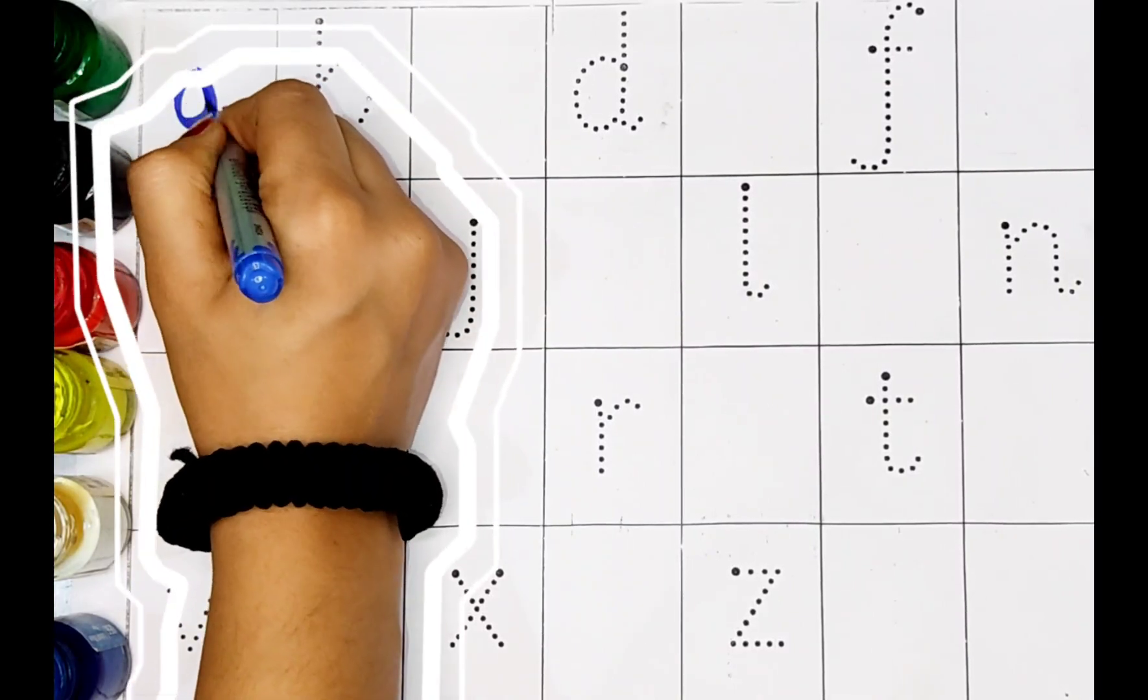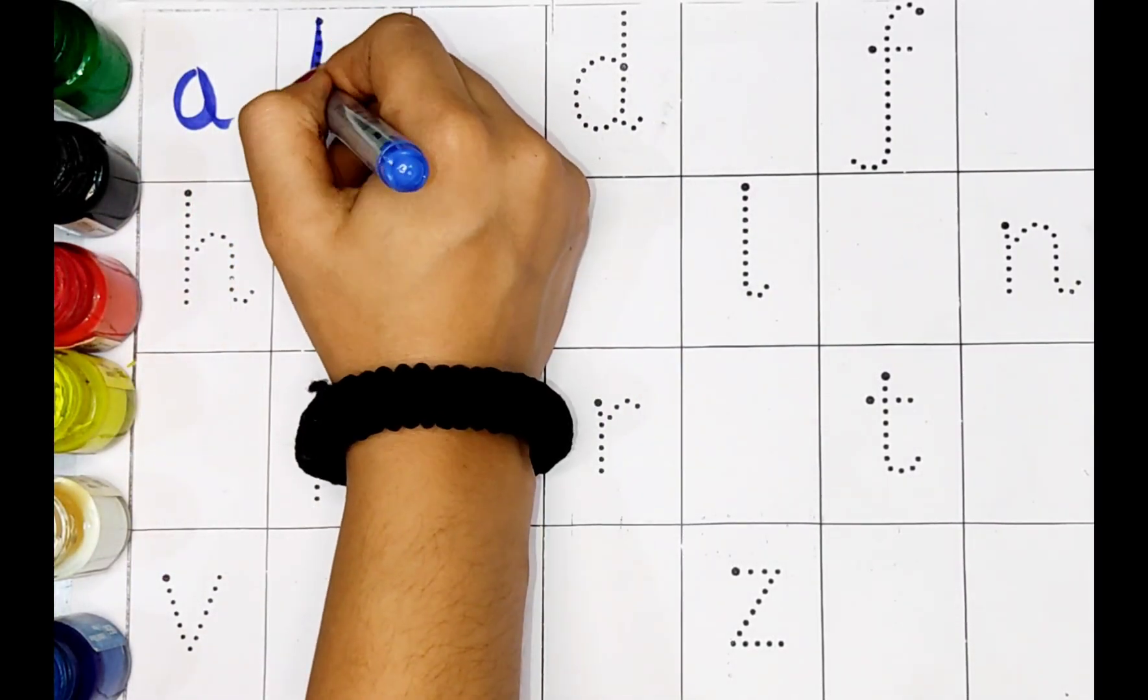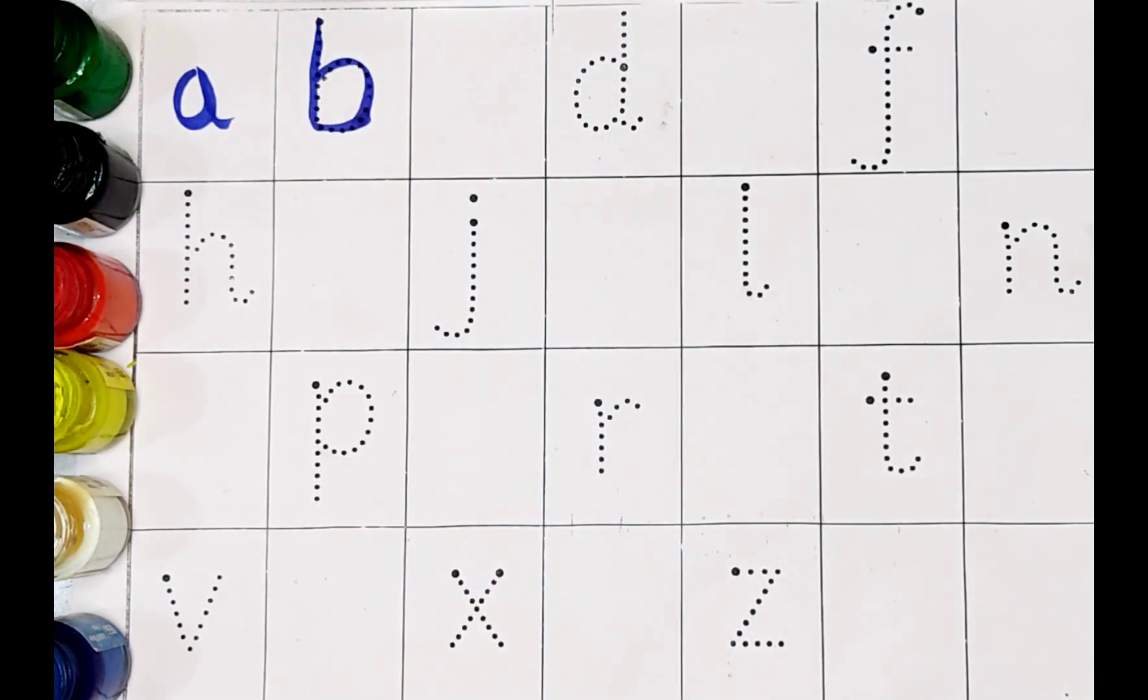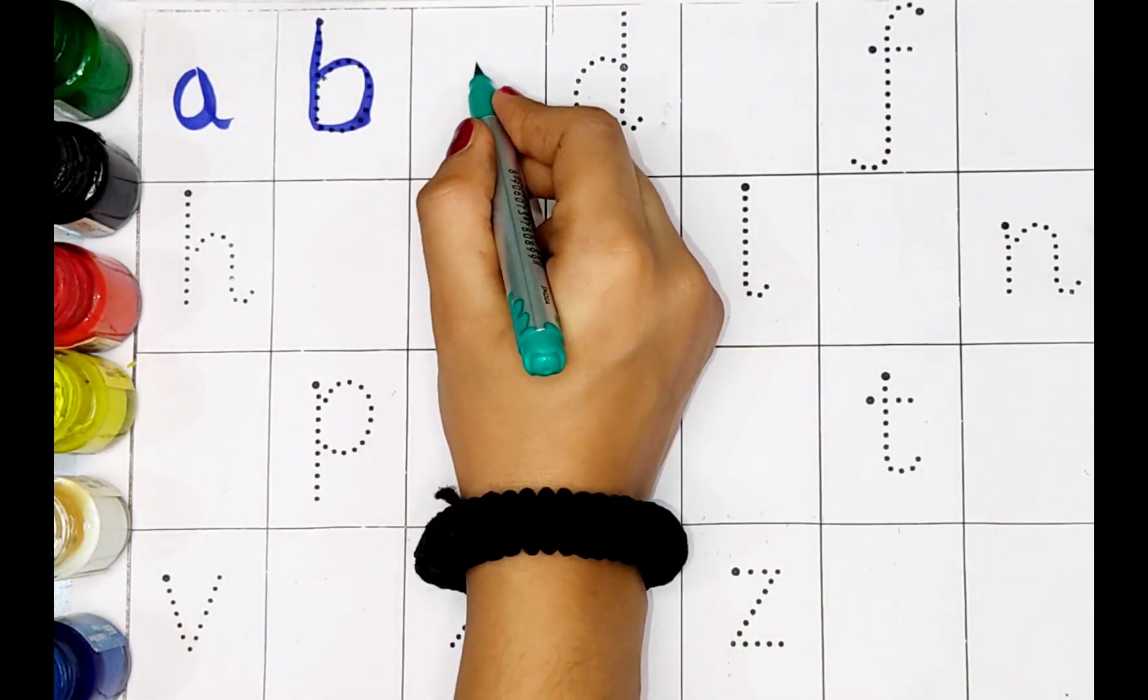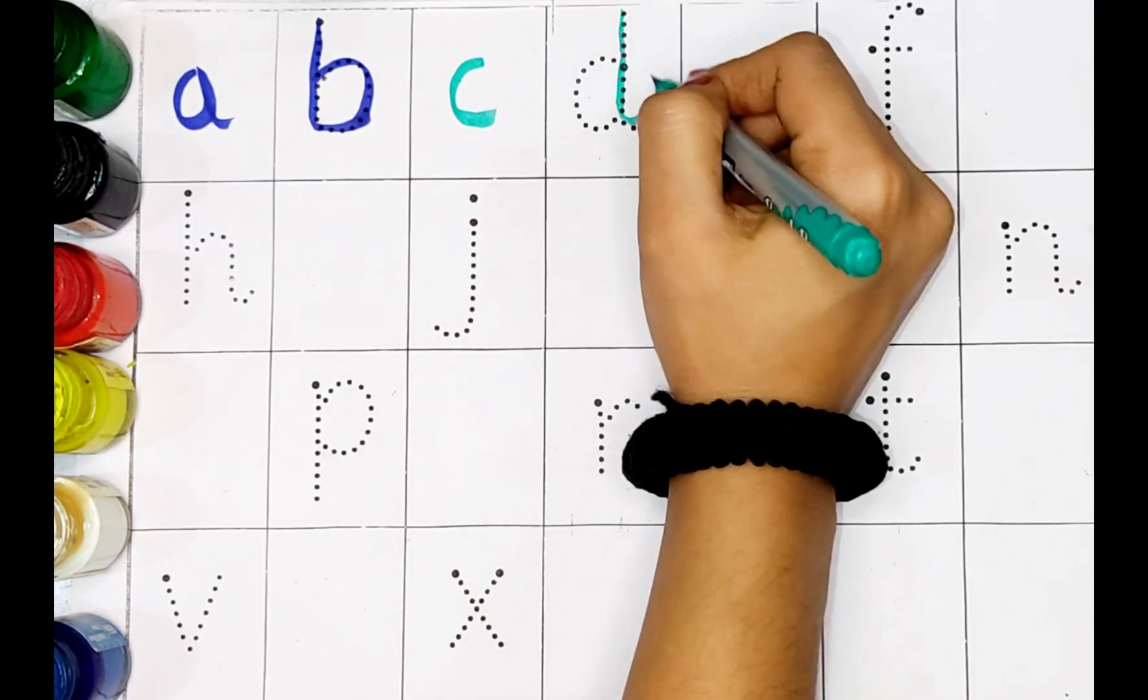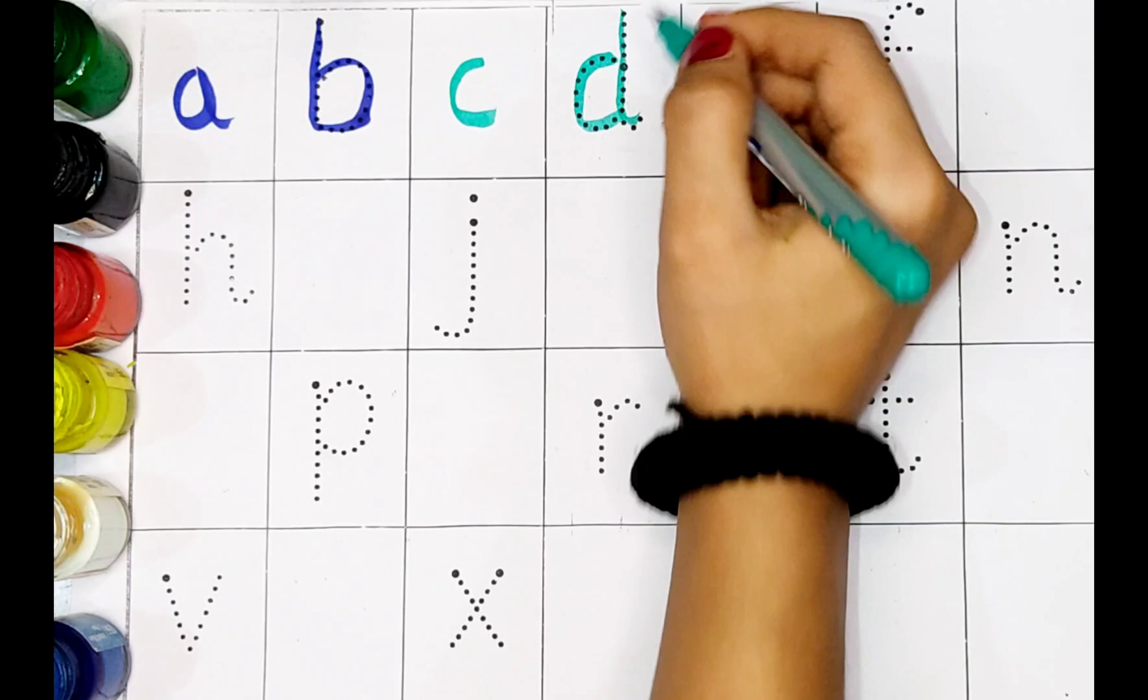A. A for apple. B. B for ball. C. C for cat. D. D for dog.